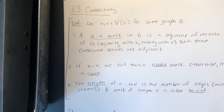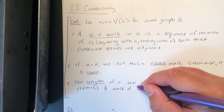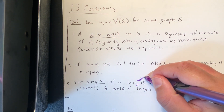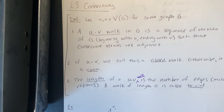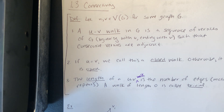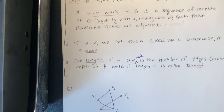If u and v are actually the same vertex — if you're starting and ending on the same vertex — we call this a closed walk. Otherwise, if u and v are different, we call it an open walk. The length of a u-to-v walk is the number of edges, including any repeated edges. If the walk has length 0, starting and ending at u without doing anything, we call it a trivial walk.